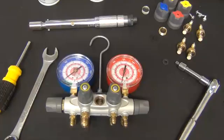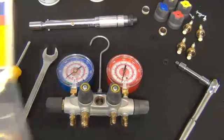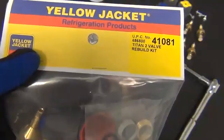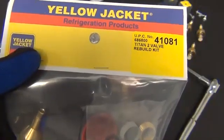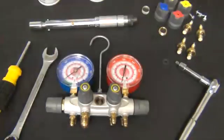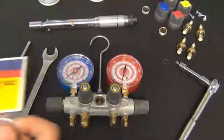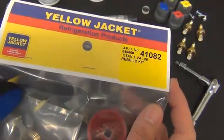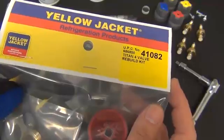You'll need the following parts and tools to rebuild the manifold. Part number 41081 is a complete rebuild kit for a two-valve Titan, and 41082 is a complete rebuild kit for a four-valve Titan.